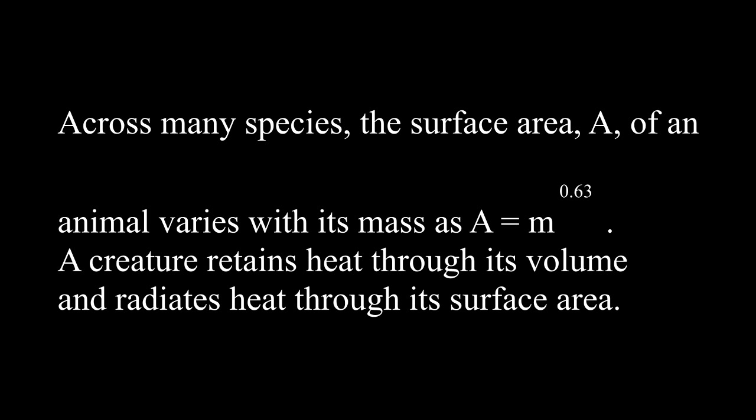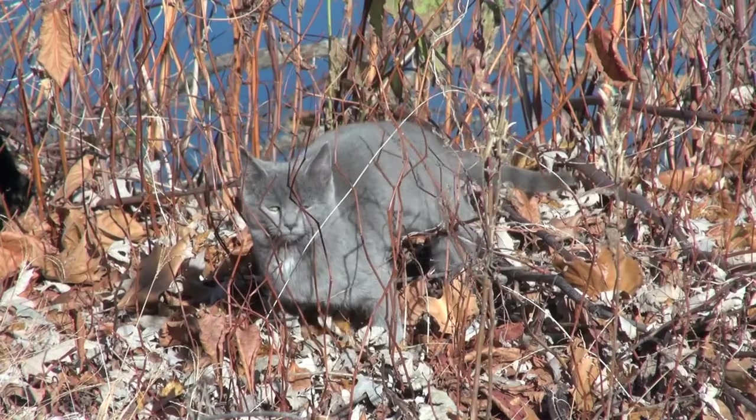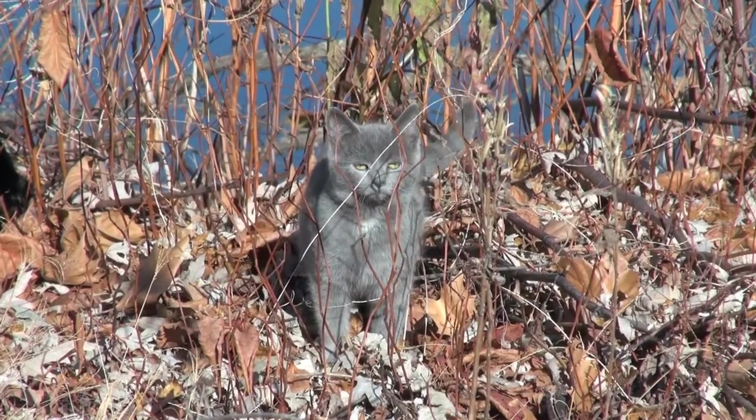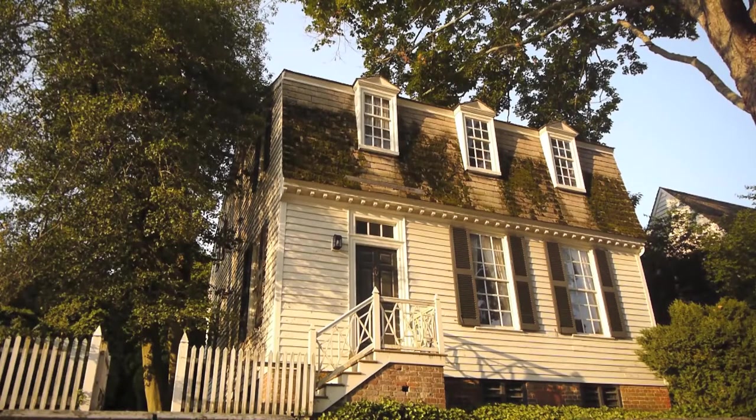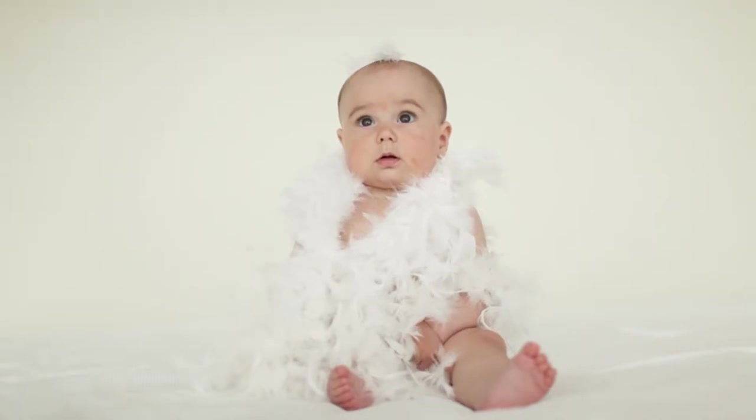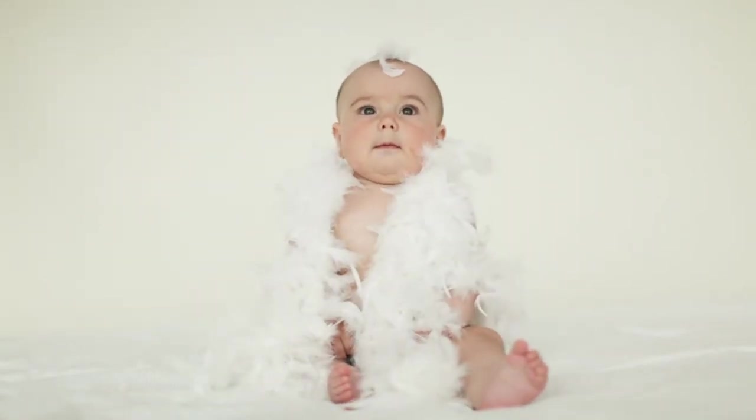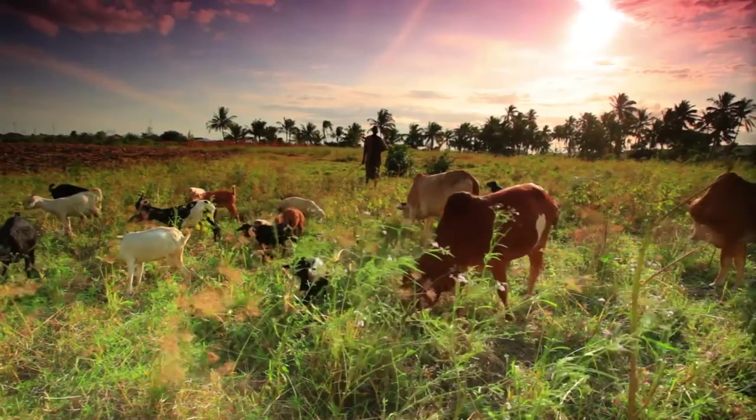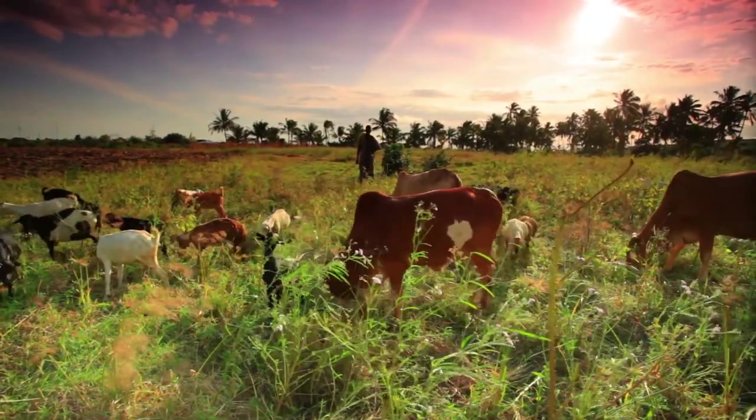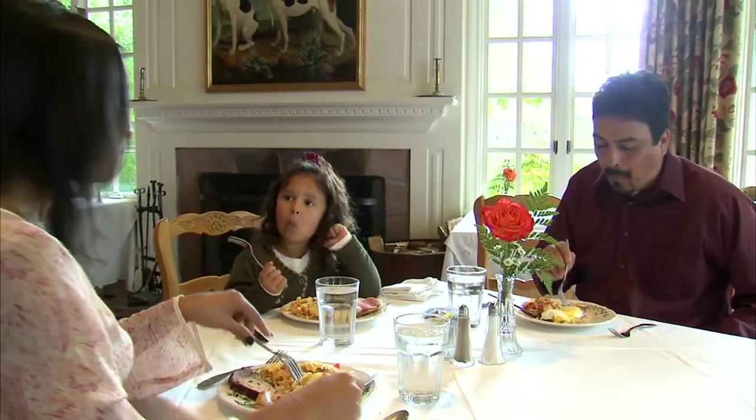Across many species, the surface area A of an animal varies with its mass as A equals M to about the two-thirds power. A creature retains heat through its volume and radiates heat through its surface area. Mice and cats have little volume so they retain little heat. For example, I know one cat who likes to stay in the attic which is 130 degrees Fahrenheit. Our babies are all surface area and no volume so we use many blankets to keep them warm. Animals over 100 pounds hold more heat than they radiate away. When adults feel cold or hot, children and small pets will not agree.